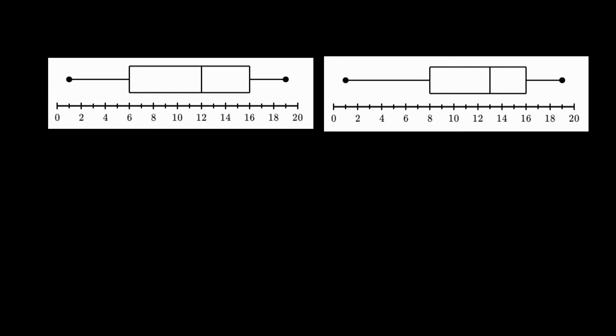If you have the actual box and whisker plots, it's even easier, because you know that the box, this actual box right here, this is what represents the interquartile range.